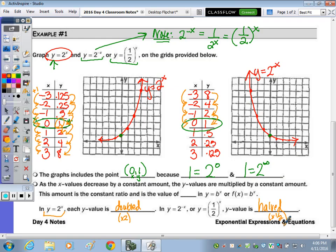The bullet above says as the x values decrease by a constant amount, the y values are multiplied by a constant amount. This amount is your b value again: a b value of 2 and a b value of one-half.